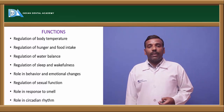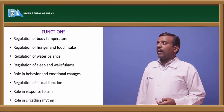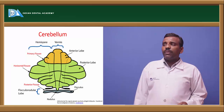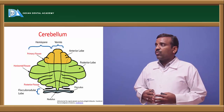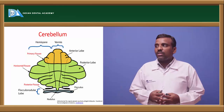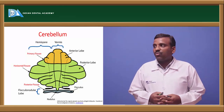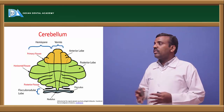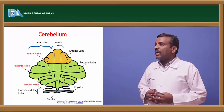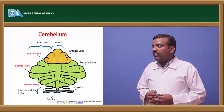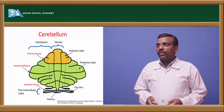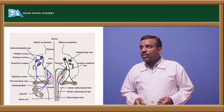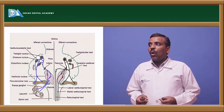The cerebellum contains two major parts: hemisphere and vermis. It also contains the primary fissure, horizontal fissure, and posterior fissure. Regarding its connections, the efferent connections from the cerebellum include the lateral vestibular tract, medial vestibular tract, and reticulospinal tract.